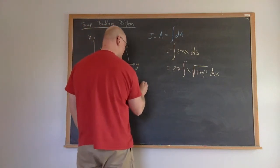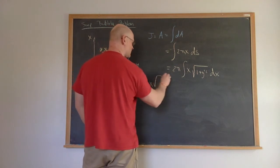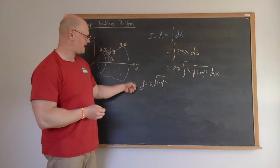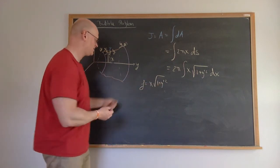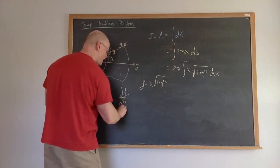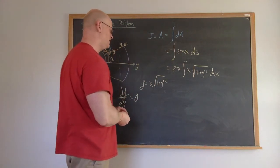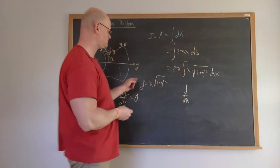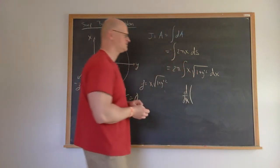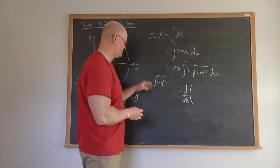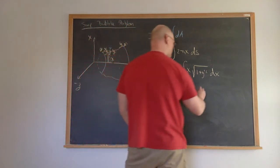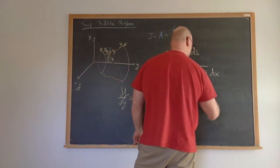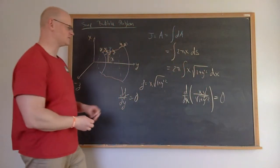With this new choice, f equals x times √(1 + y'²), which has no dependence on y — only on y prime. That means the partial derivative of f with respect to y is zero. So our Euler equation becomes: the partial of f with respect to y prime, which is x·y'/√(1 + y'²), must equal zero.